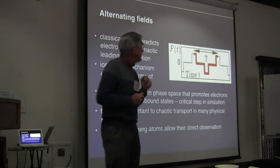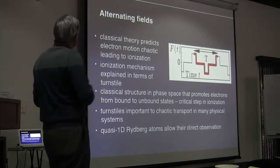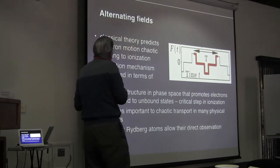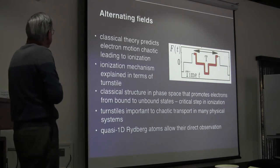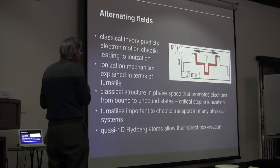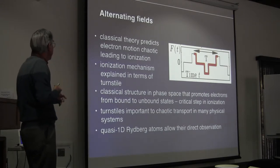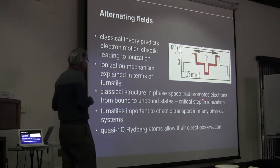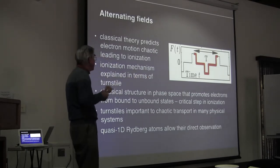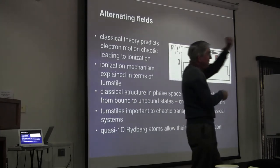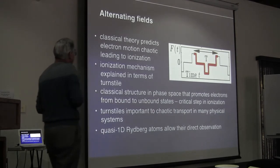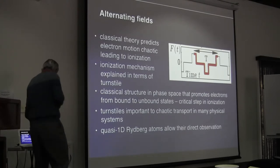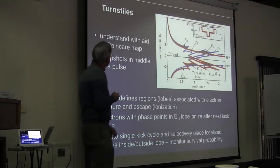Consider what happens if we take alternating fields — a kick one way, then the other, alternating. It turns out that with alternating kicks, you get chaotic motion with no islands of stability. The ionization mechanism is explained by what theorists call a turnstile — a classical structure in phase space that promotes electrons from bound to unbound states. Such turnstiles are important to chaotic transport in many physical systems, and Rydberg atoms provide one of the first ways to observe their effects.